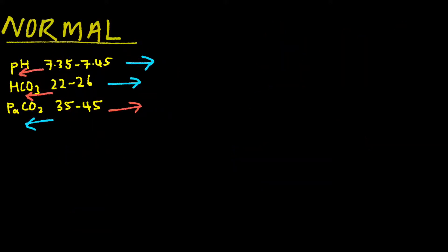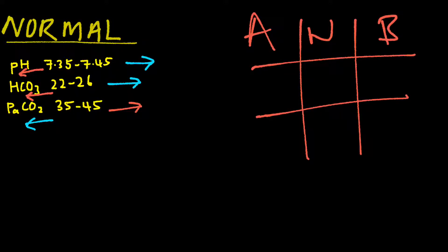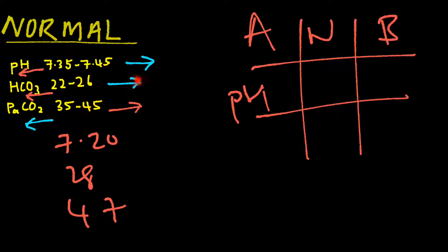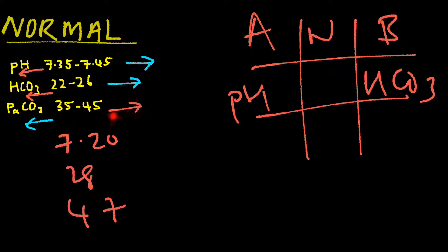Let's try another example. Drawing our tic-tac-toe — acid, normal, and basic. We have three results: pH is 7.20, HCO3 is 28, and PaCO2 is 47. 7.20 falls under the acid category for pH. pH is under acid. Next, 28 for HCO3 falls under the alkaline category, so HCO3 is under basic. 47 for PaCO2 would be under the acid category. PaCO2 under acid category.